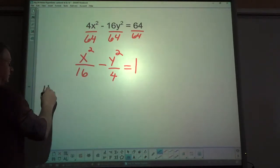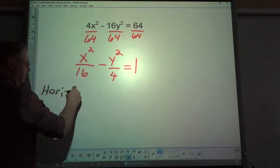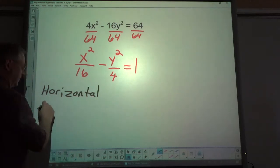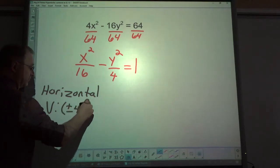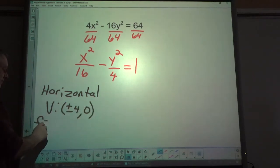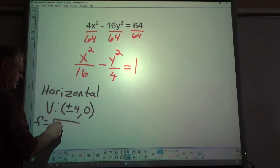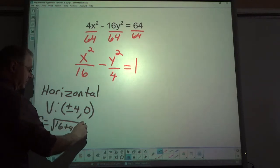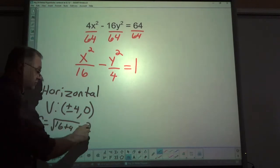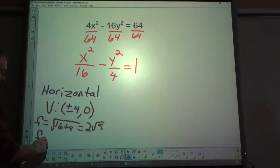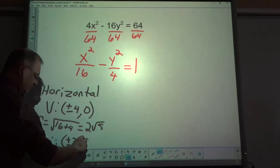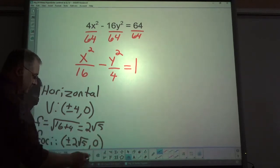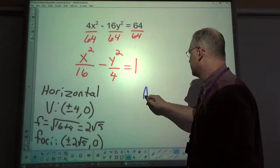This is horizontal. The vertices are at plus, minus 4, 0. f is the square root of 16 plus 4, or 20, which is 2 square root of 5. So, foci are at plus, minus 2 square root of 5, comma, 0.